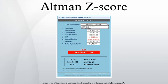For non-manufacturers and emerging markets, the model uses: T1 = working capital / total assets, T2 = retained earnings / total assets, T3 = earnings before interest and taxes / total assets, T4 = market value of equity / total liabilities. The formula is: Z = 6.56·T1 + 3.26·T2 + 6.72·T3 + 1.05·T4. Zones of discrimination: Z > 2.6 is the safe zone; 1.1 ≤ Z ≤ 2.6 is the grey zone; Z < 1.1 is the distress zone.